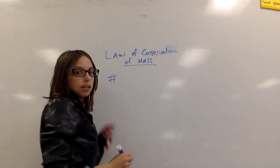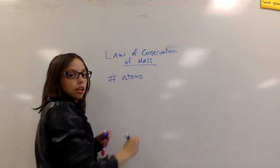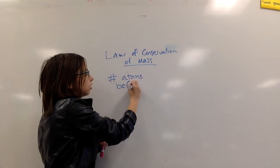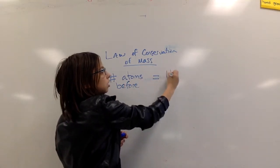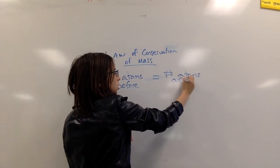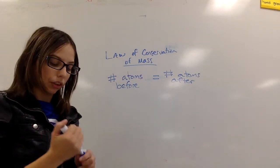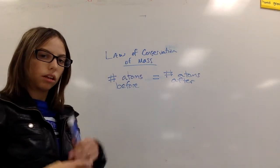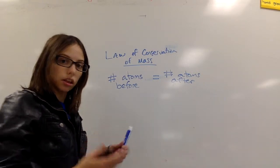In simple terms, what that means is the number of atoms in a reaction that you have before, so what goes into a reaction, is going to be equal to the number of atoms that come out of that reaction or come after the reaction. I won't get rid of atoms. I won't have unaccounted for atoms. They'll all be present and accounted for.